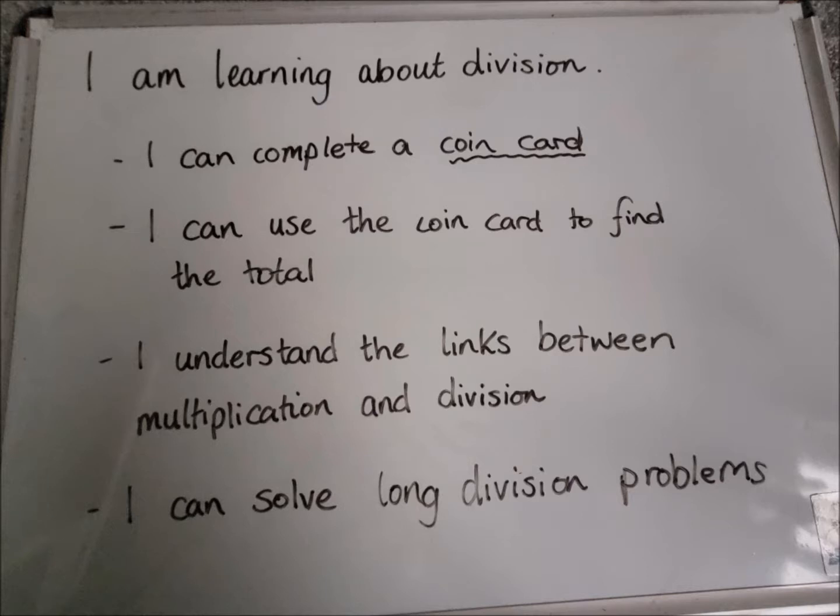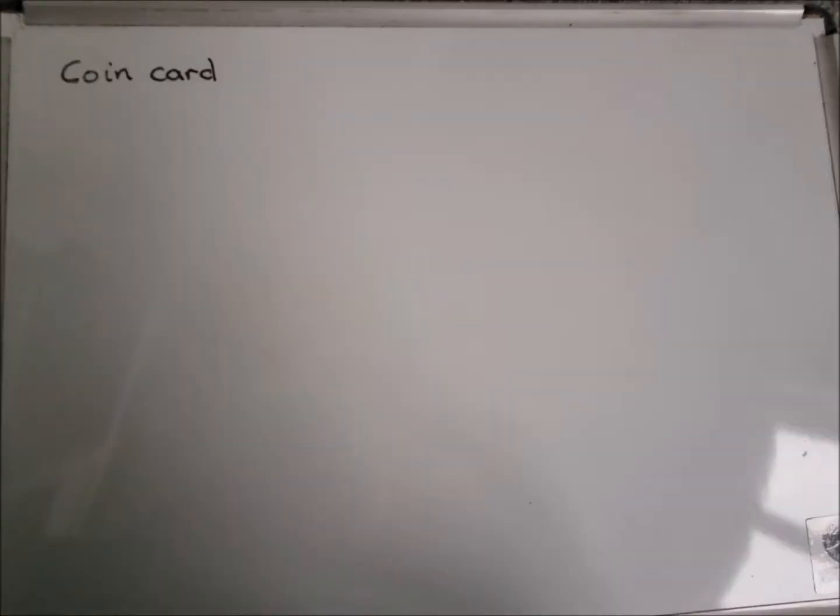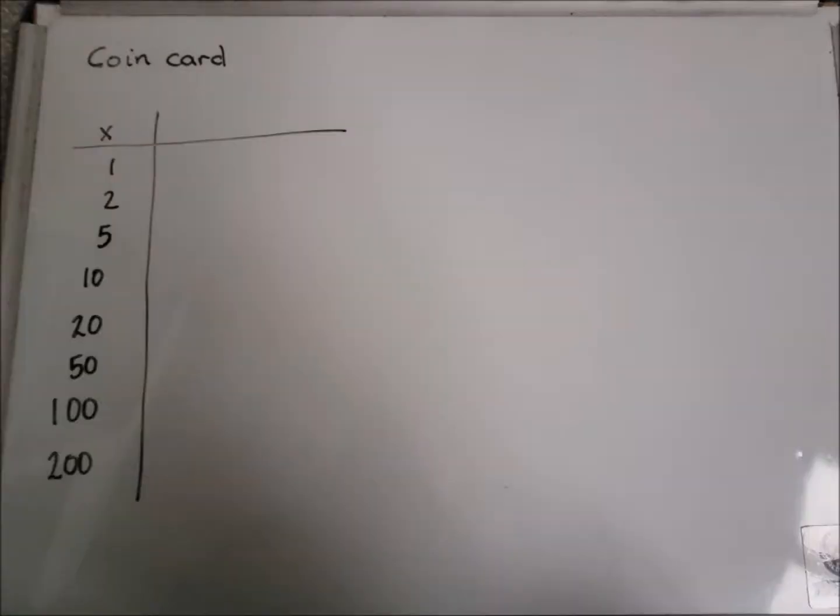So the first thing we need to think about is a coin card. If you're not sure what a coin card is, I have posted another video about how to do coin cards, so it might be a good idea to start there if you're not sure and then come back to this lesson. A coin card looks a little bit like this, we've got all the coins that we use down the side. I would recommend if you're doing it on a whiteboard or piece of paper to draw it out nice and big so you've got lots of space to do the work inside.